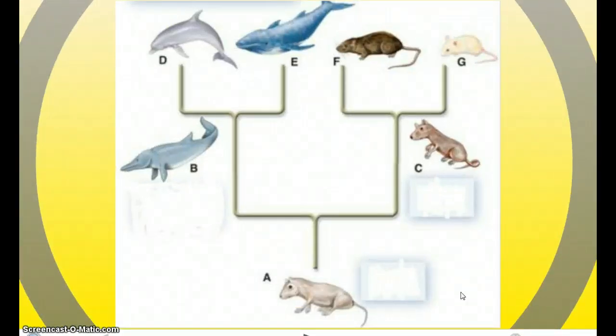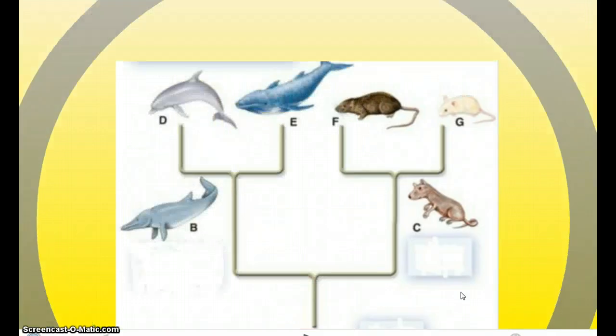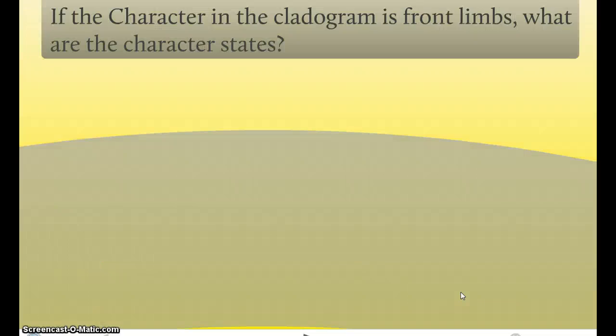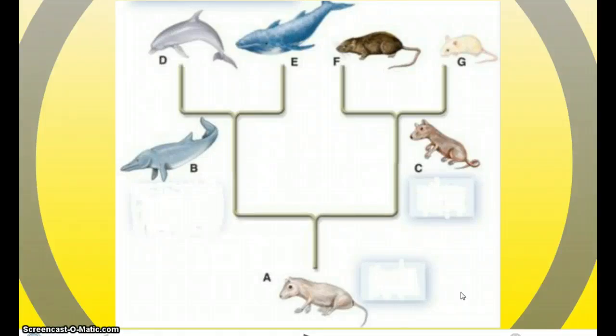If the character in this cladogram is front limbs, what are the character states? We would look at this cladogram and see that everyone has front limbs. A, B, C, D, E, F, G. But what are the two states those front limbs come in? And the answer to that is arms, like C has, and fins, like B has.